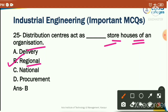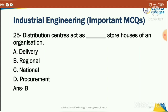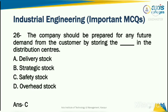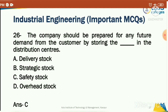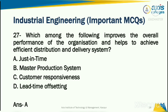The company should be prepared for any future demand from the customer by storing what in the distribution centers? Options: delivery stock, strategic stock, safety stock, or overhead stock. The correct answer is safety stock — companies store safety stock in distribution centers to prepare for future customer demand.